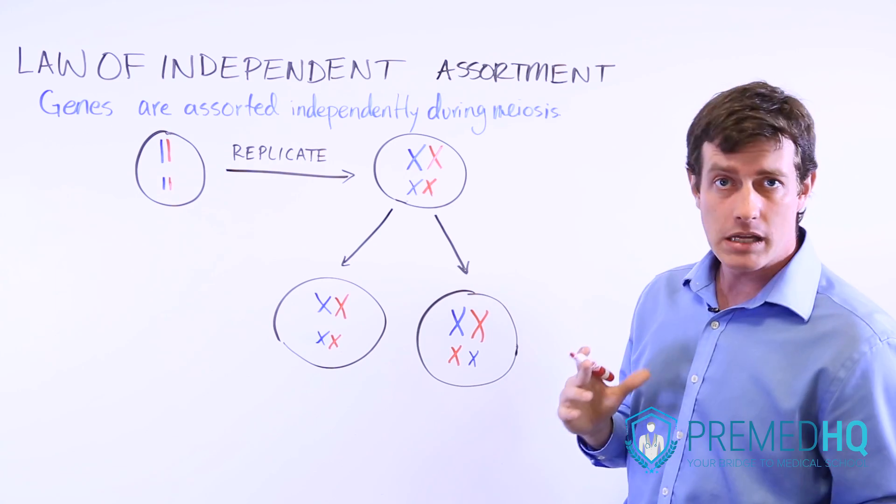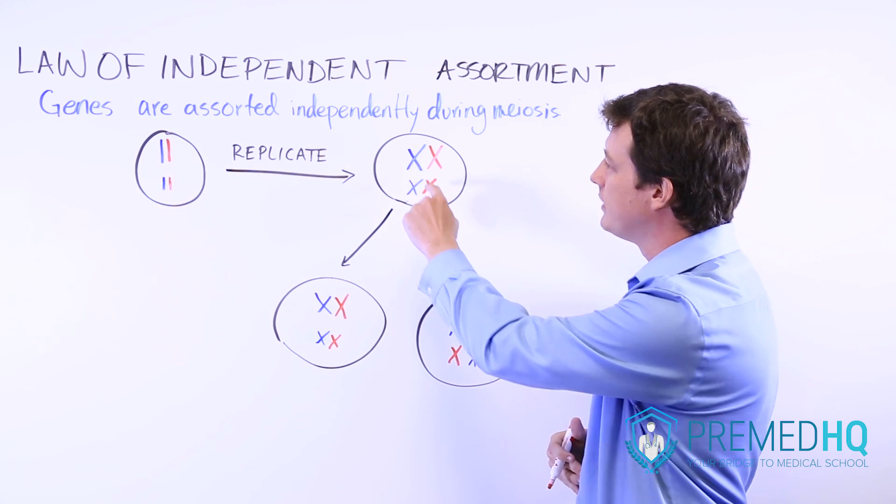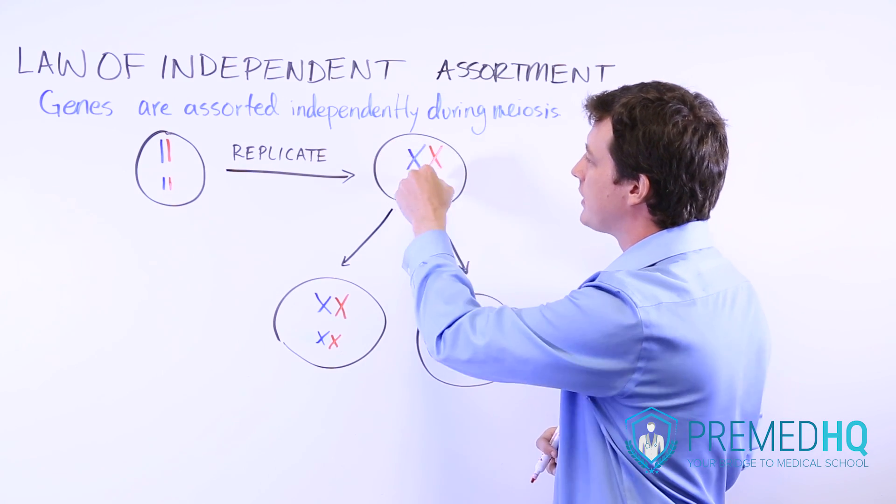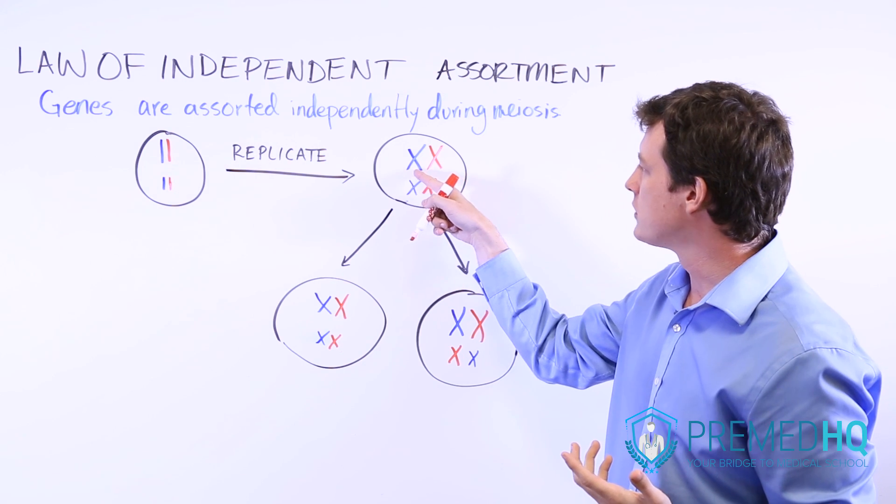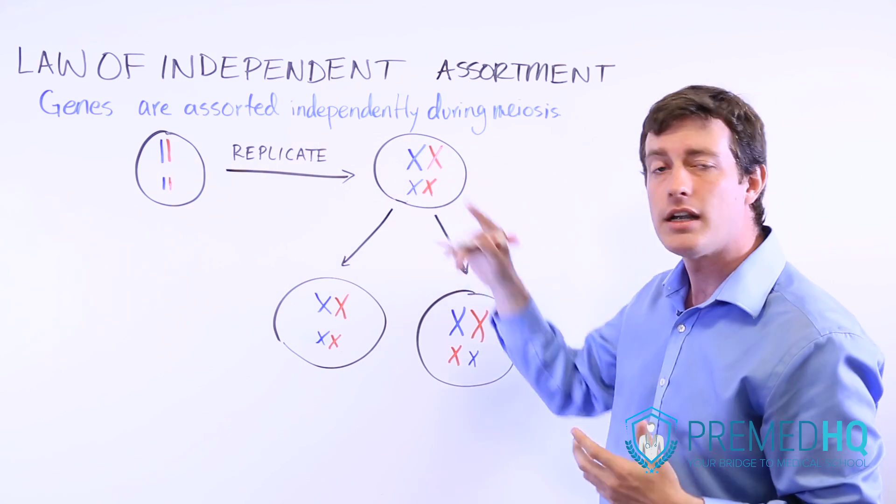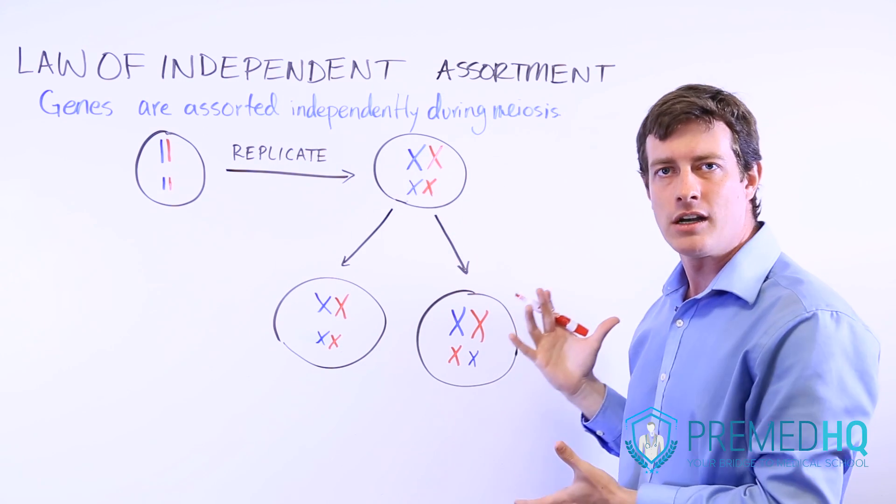Now one thing that you might pose with an example like this is that what if they're on the same chromosome? Aren't they likely to, if there's a gene down here and a gene up there, aren't those likely to be inherited together?